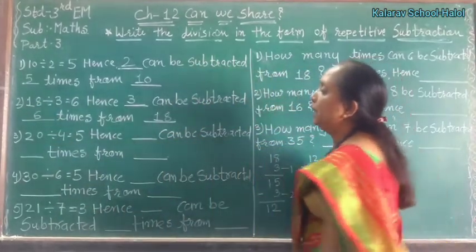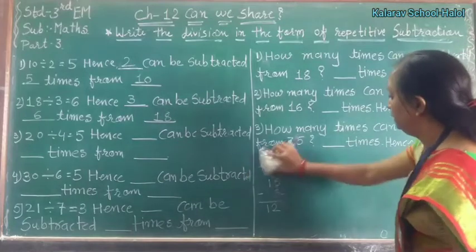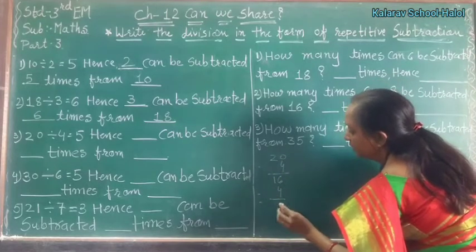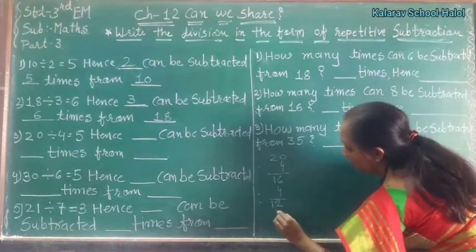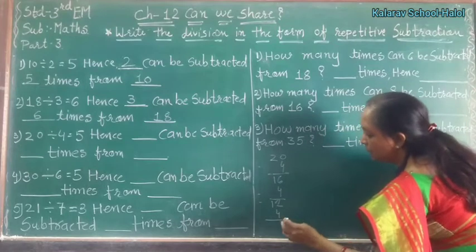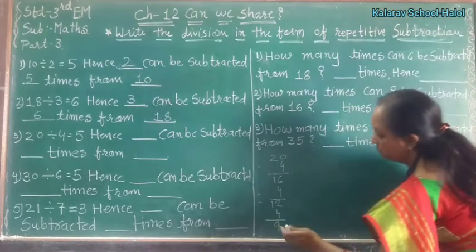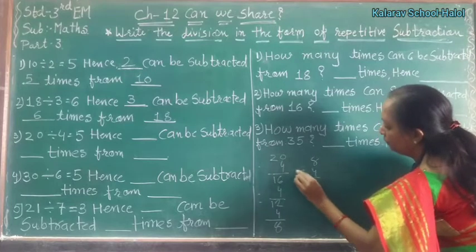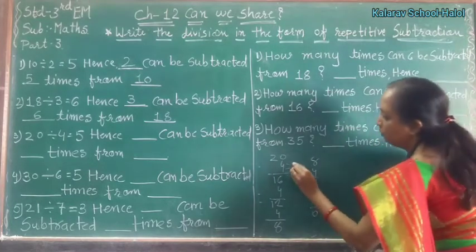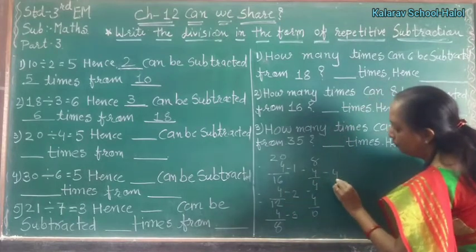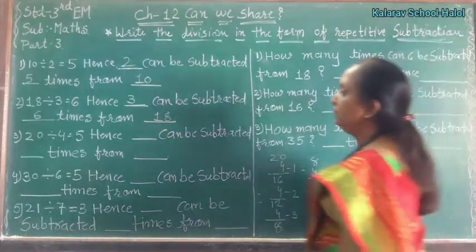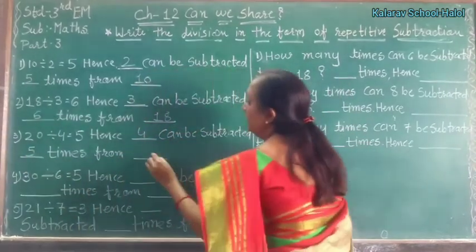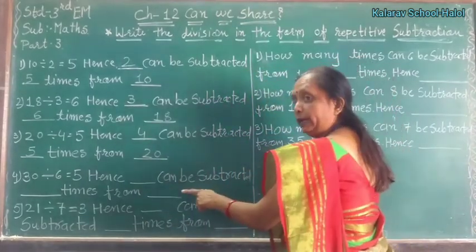Now, 20 divided by 4. So: 20 minus 4 is 16, 16 minus 4 is 12, 12 minus 4 is 8, then 8 minus 4 is 4, 4 minus 4 is 0. So: 1 time, 2 times, 3 times, 4 times, and 5 times. Hence, 4 can be subtracted 5 times from 20.